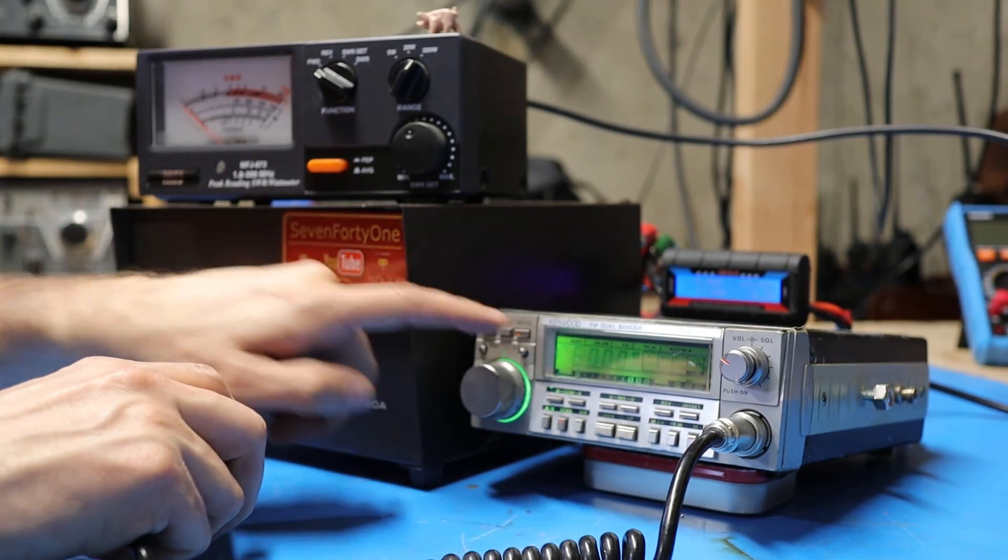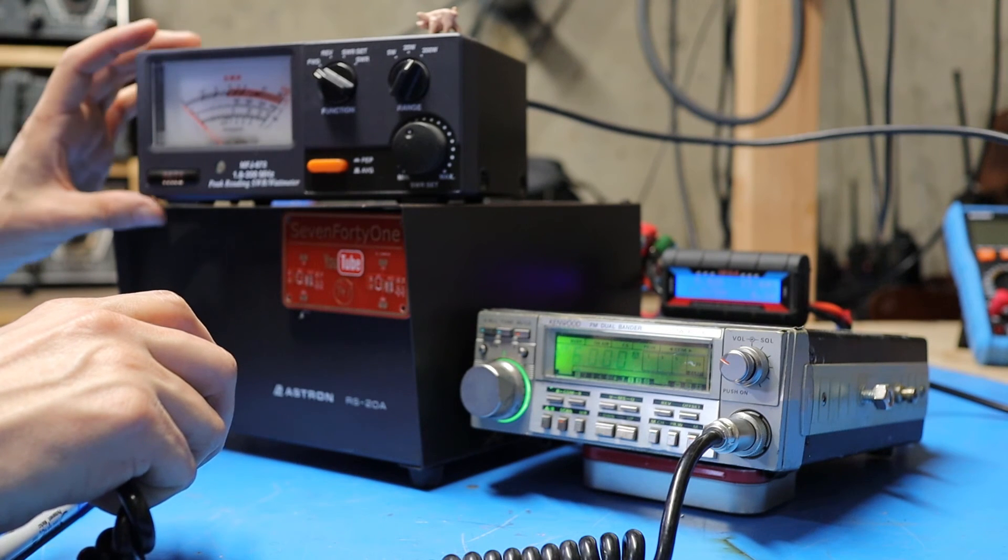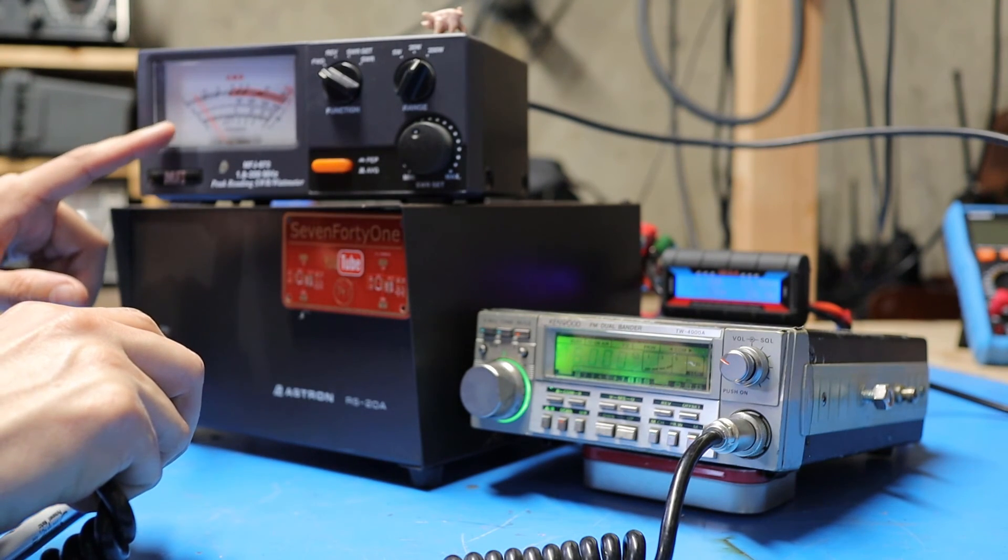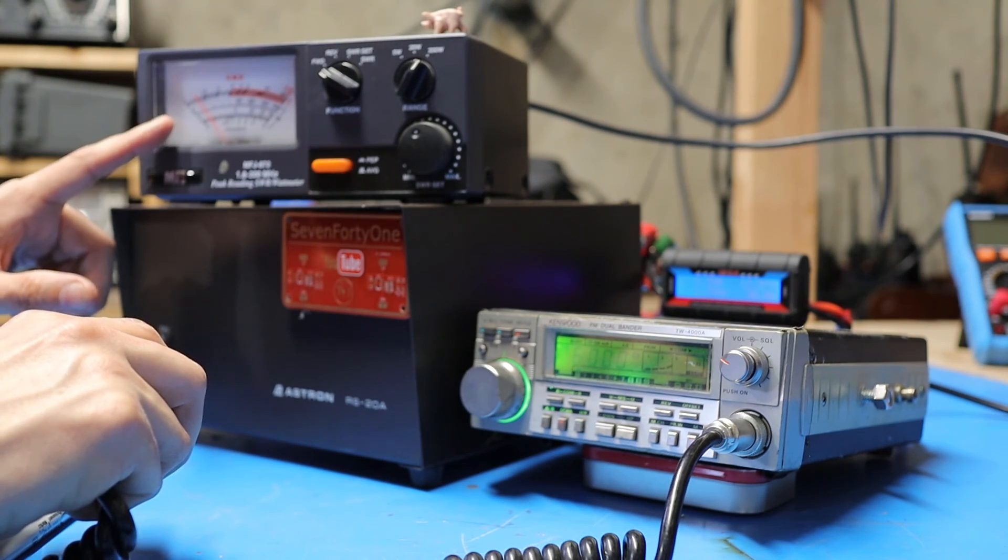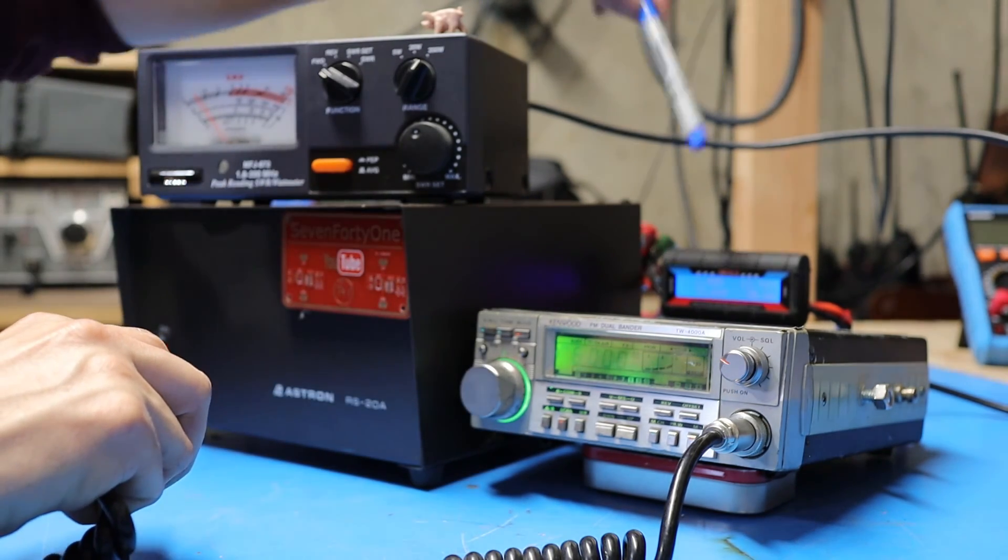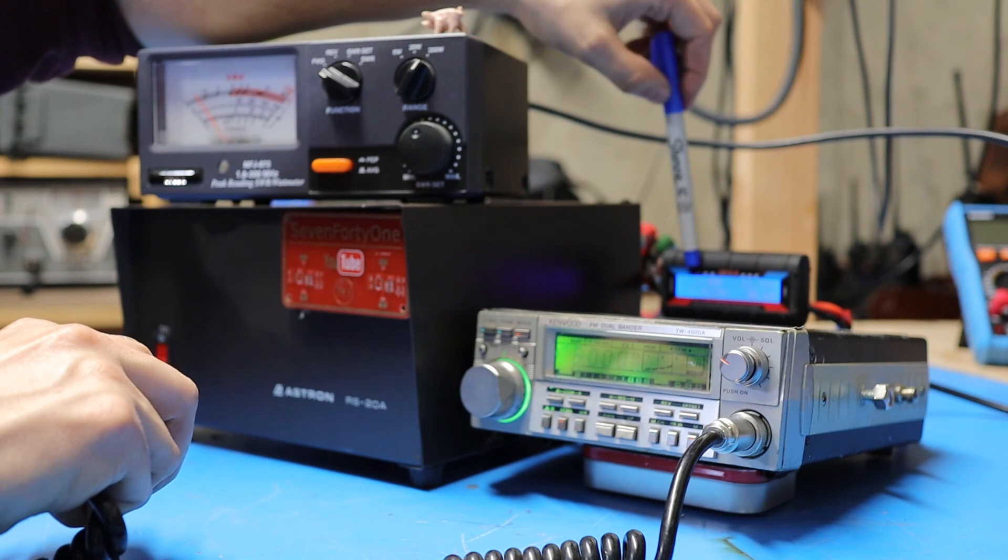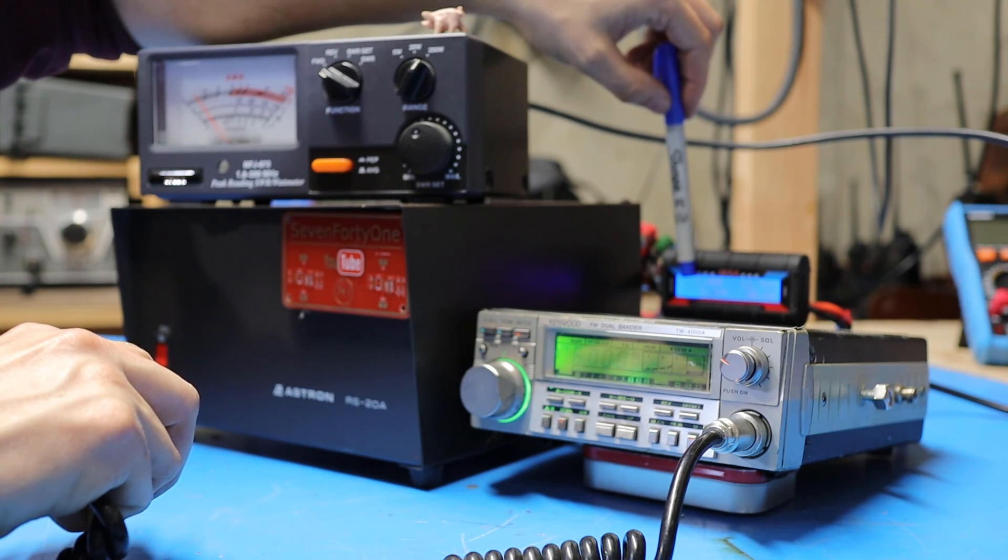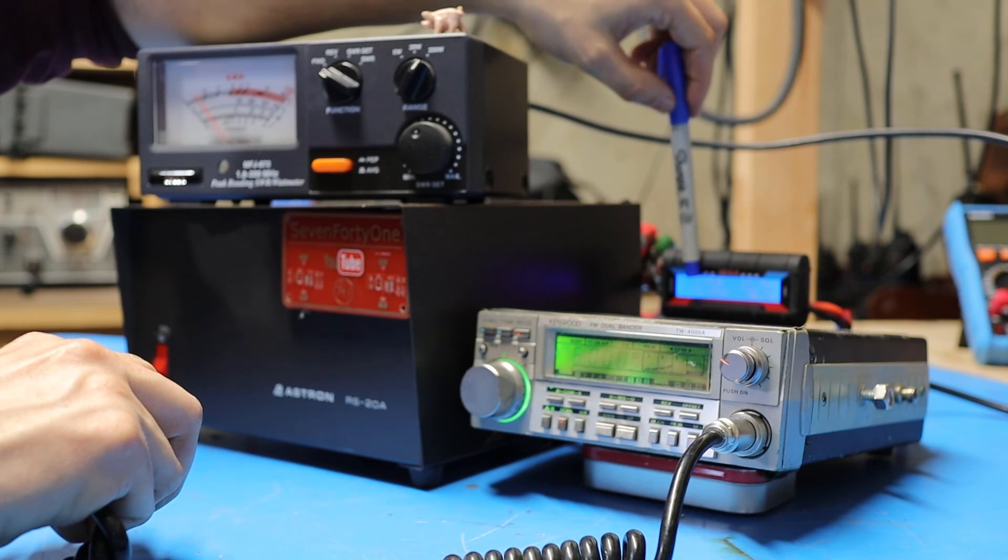If I key the radio up in low power mode, let's see what we get. You can see we're putting out about five watts according to the RF meter, and we're now drawing about 30 watts out of the power supply from back here. And again, if we wait for this to cycle through, you can see we're drawing about two and a half amps.